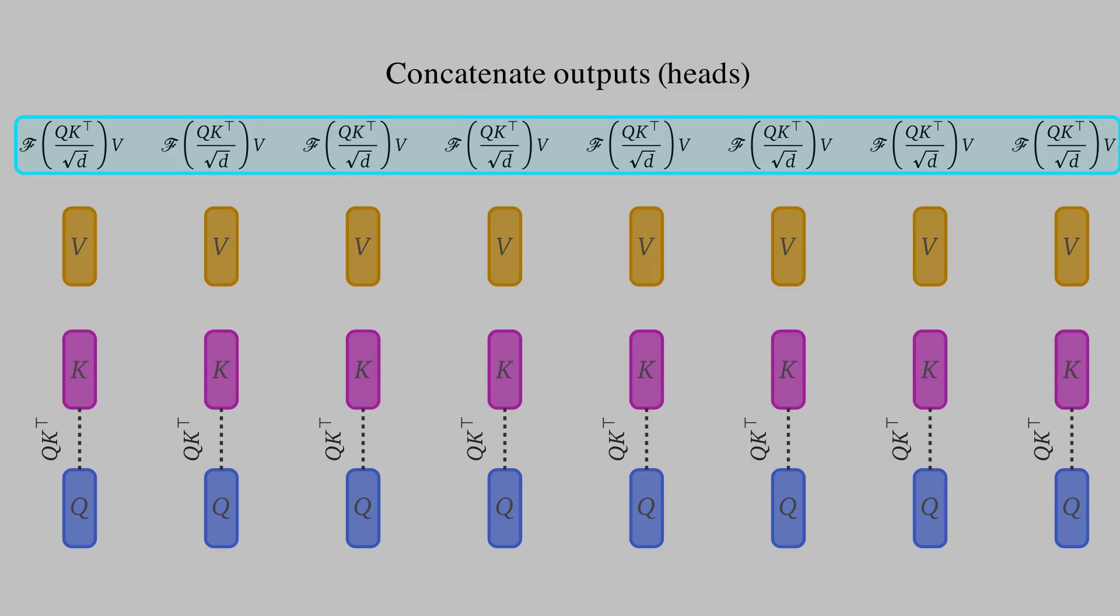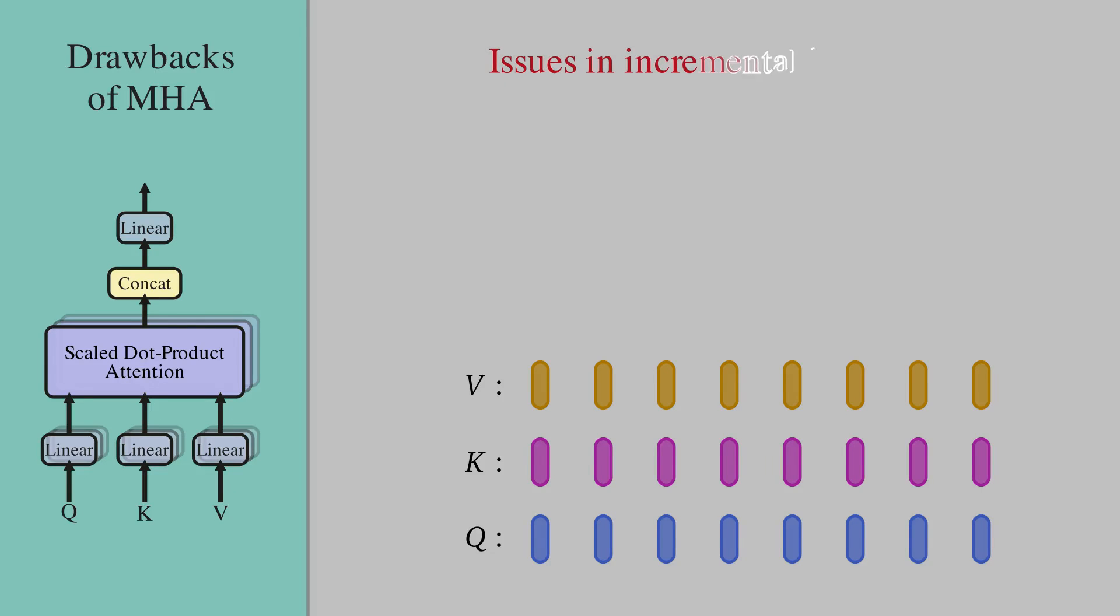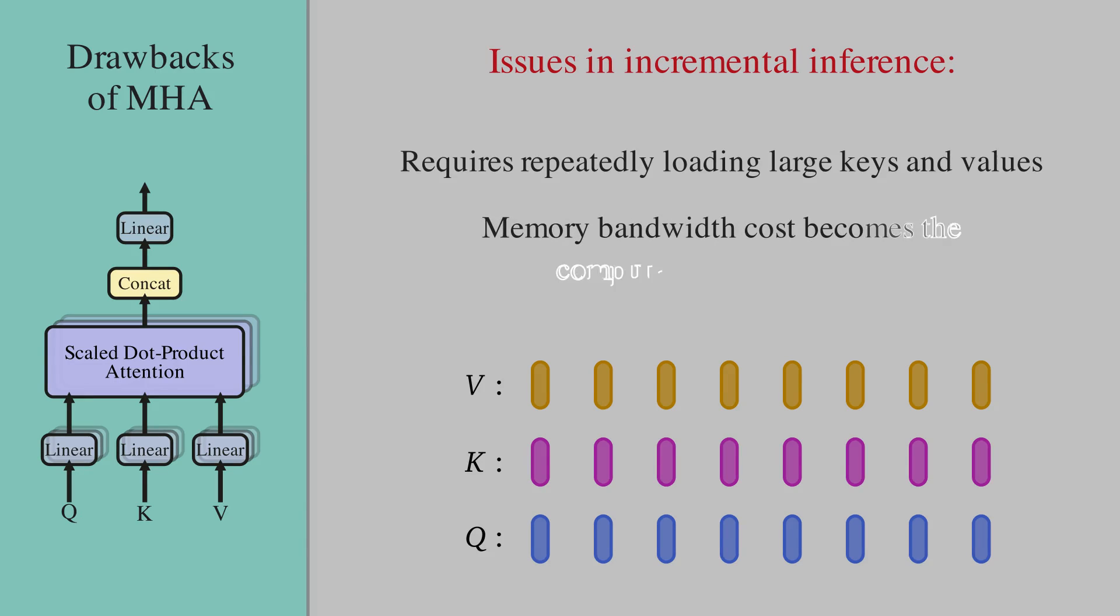Now, what are the drawbacks of multi-head attention when doing incremental inference, for example incremental generation? In such applications we need to repeatedly load these large key and value matrices into memory, and as a result the memory bandwidth becomes the bottleneck in these computations.